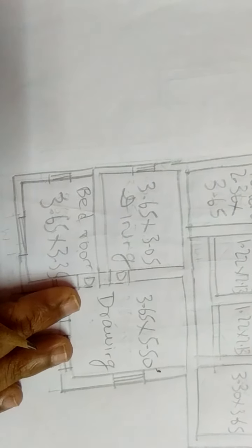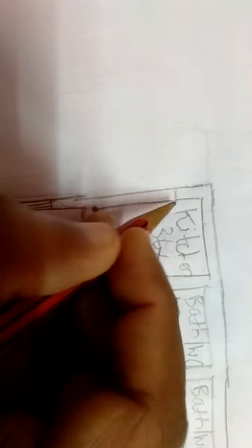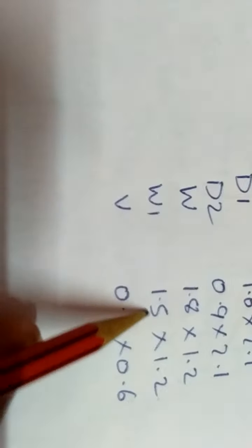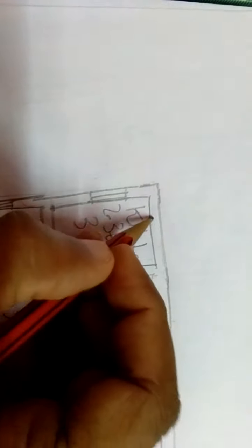This is how the doors and windows are marked. Now let us go to the kitchen room. In the kitchen room, here is one window and another window — that is W1. W1 means 1.5 meter width. You can see the 1.5 meter width marked with a double line. Similarly here also.